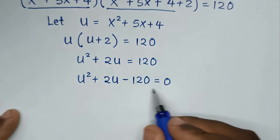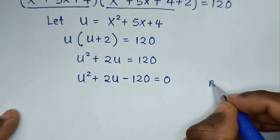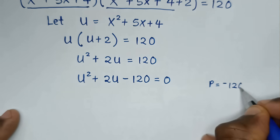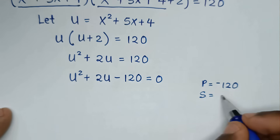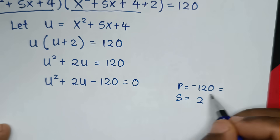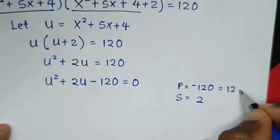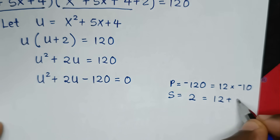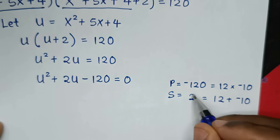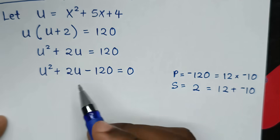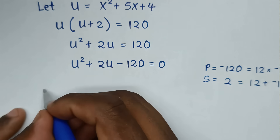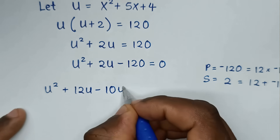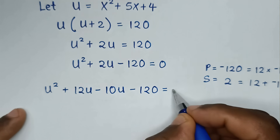This quadratic equation can be solved by grouping and factorization. The product of the coefficient of u² (which is 1) times -120 gives -120, and the sum needed is 2. The factors 12 and -10 satisfy: 12 × (-10) = -120 and 12 + (-10) = 2. So we split 2u as +12u - 10u, giving u² + 12u - 10u - 120 = 0.